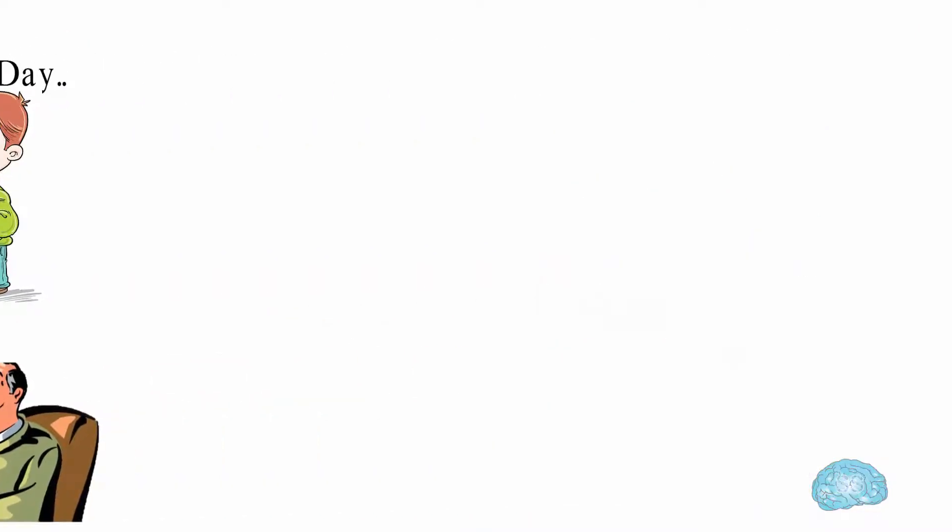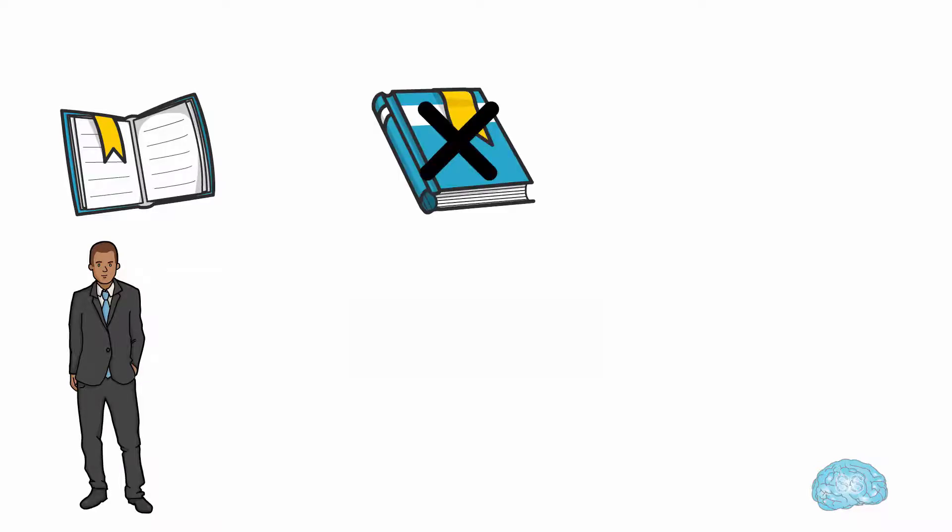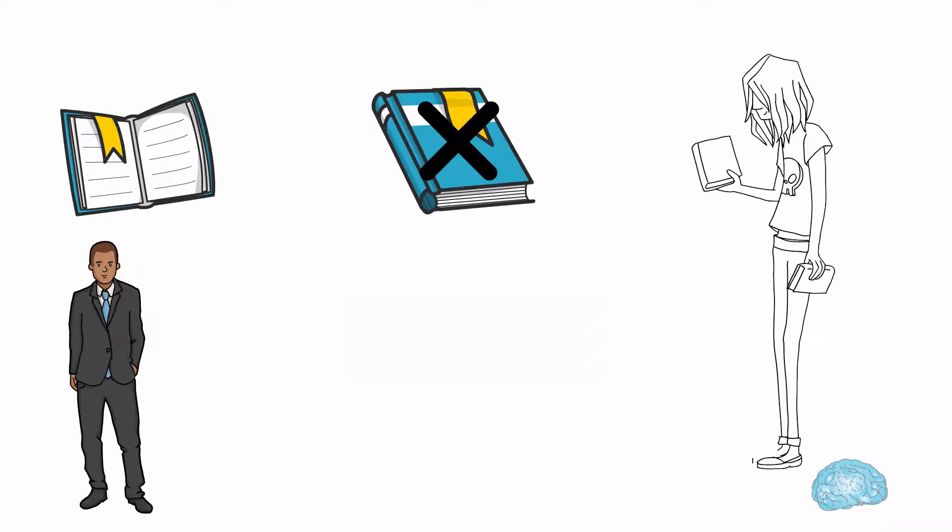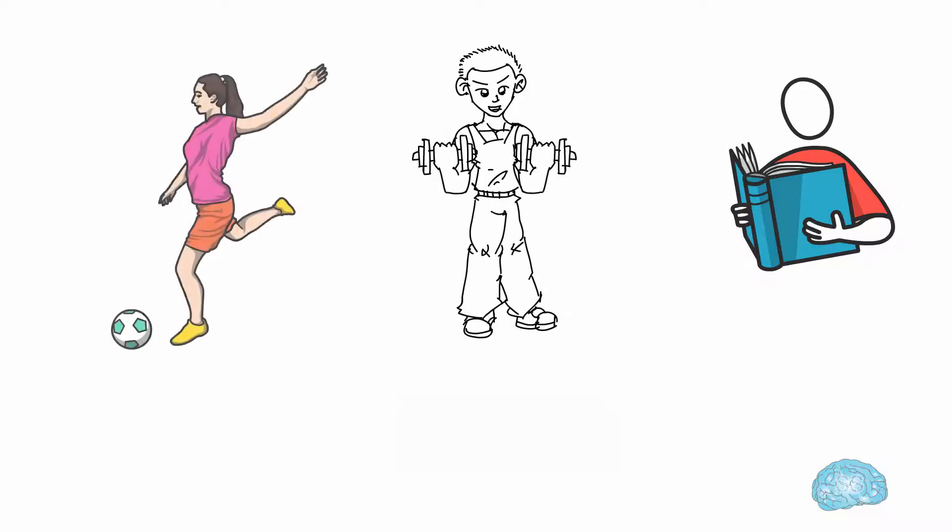On the other hand, if a person reads a page of a book today, tomorrow he might skip it. Day after tomorrow, he would think to read it later but forgets it. Because he is not consistent, he couldn't develop the habit of reading books. Whatever you do, you need to be consistent.